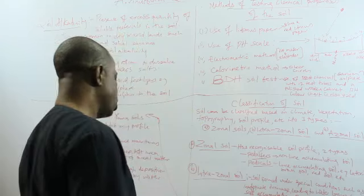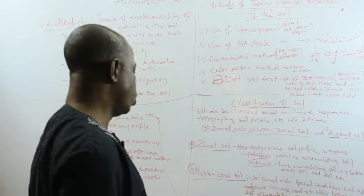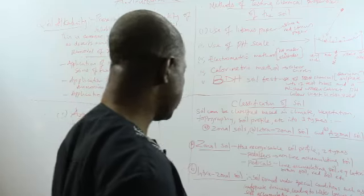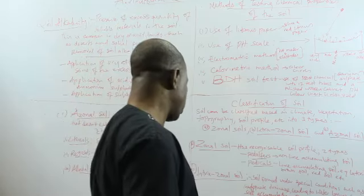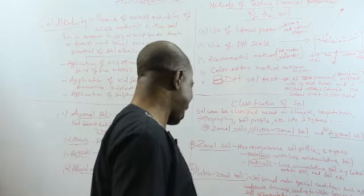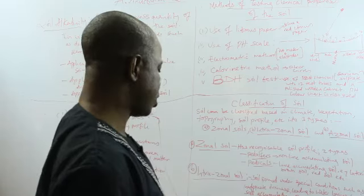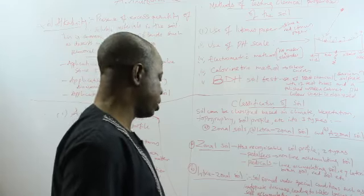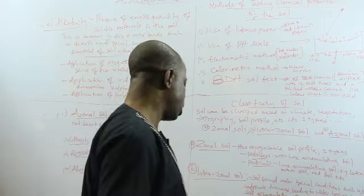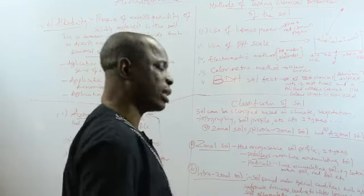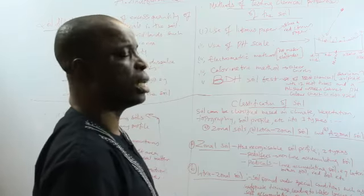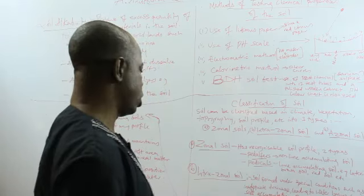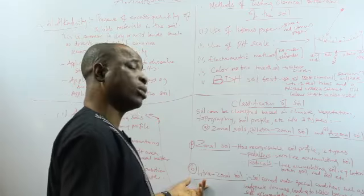Then you have intrazonal soil. Intrazonal soil can be of three types. You have hydromorphic soil, halomorphic soil, and calcimorphic soil. The word hydro is from water. The word halo is from salt. The word calcium is from calcium or lime. And morphic means love, means love or something that's affinity. Now, hydromorphic soil, they are soils that have affinity for water. Hydro is water. In other words, they contain too much water. Example is waterlogged soil. So a waterlogged soil is an intrazonal soil.